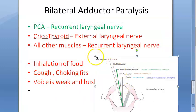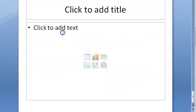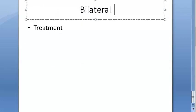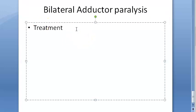The treatment involves bringing the vocal folds close together. If they are adducted, the patient can still abduct by himself, so he can breathe and also talk. Treatment depends on the cause — whatever the cause is, you fix that. Cases due to neuritis may recover spontaneously.